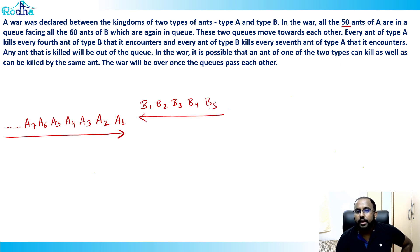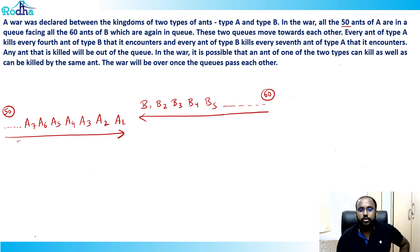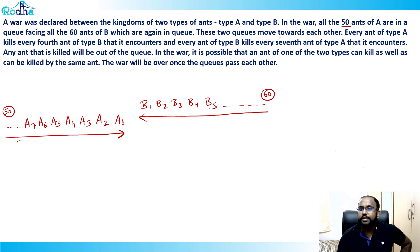So we have 50 ants of type A and 60 ants of type B, moving towards each other. Now, every ant of type A kills every fourth ant of type B.